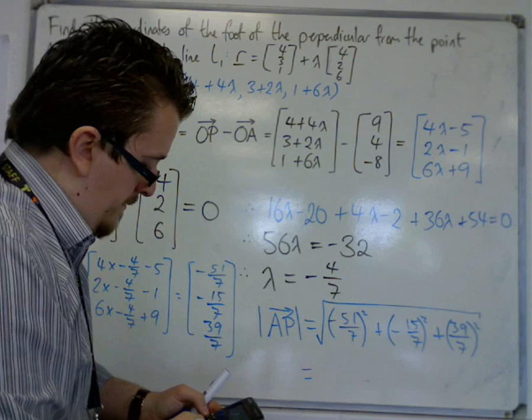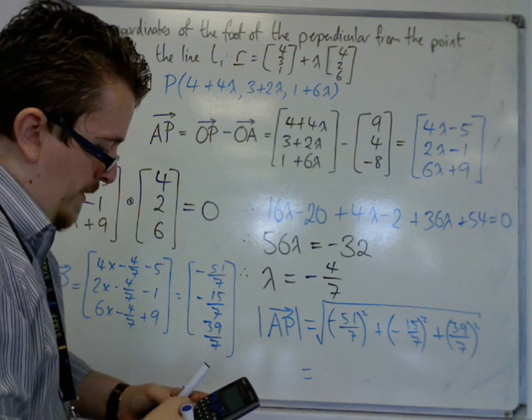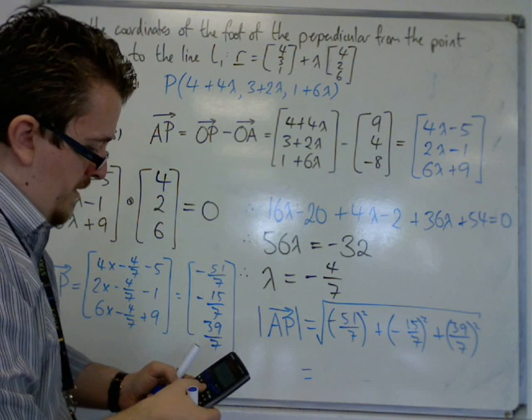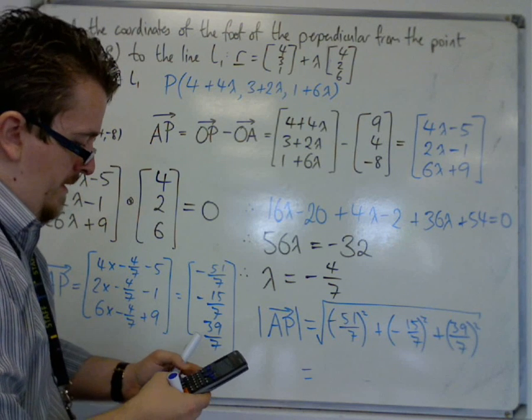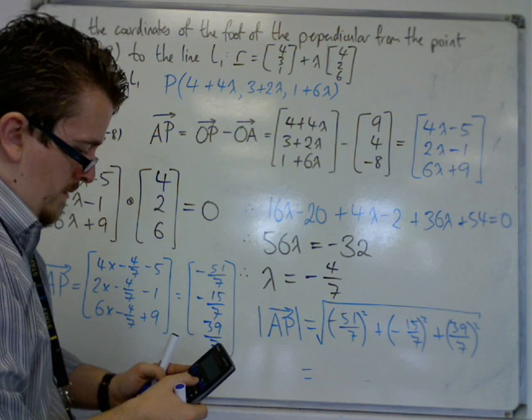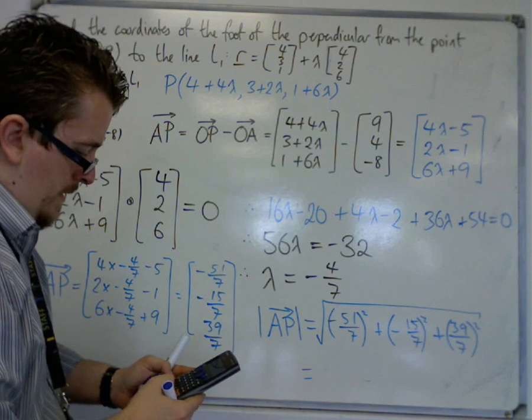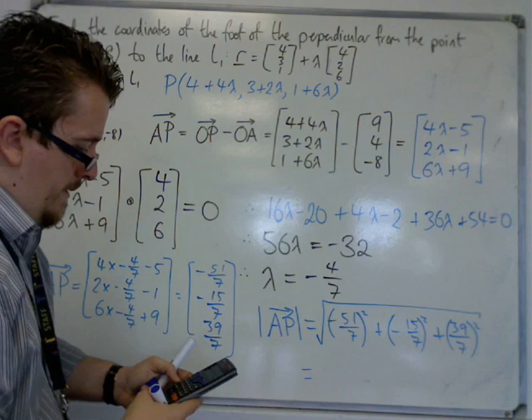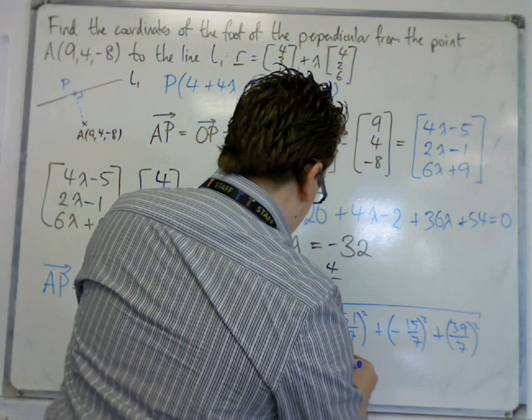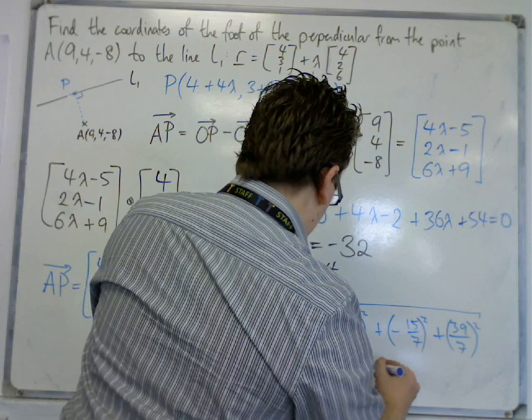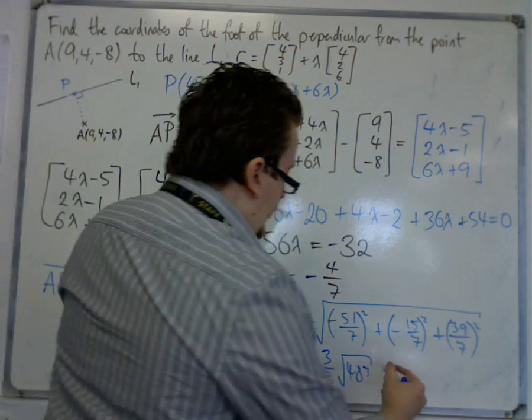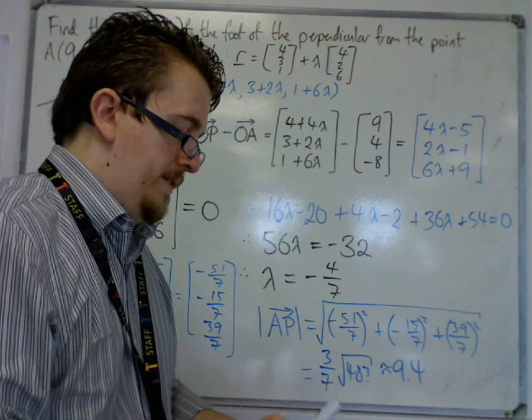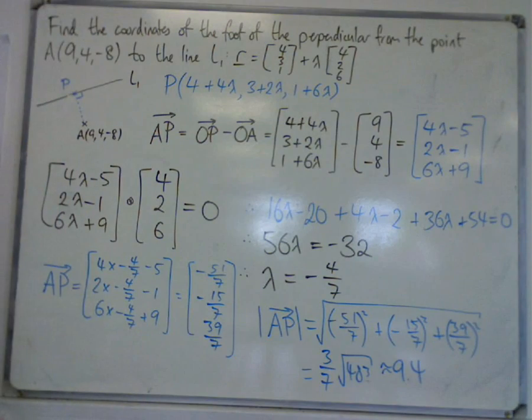Okay? So this is a nice, big, lovely-looking sum to plug into your calculator. This is equal to 3 sevenths root 483, to be exact, or as a decimal, is approximately equal to 9.4, or 9.4 to one decimal place. But as an exact value, 3 sevenths root 483.